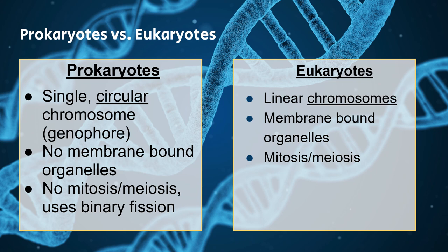Now to compare and contrast prokaryotes and eukaryotes in regards to their DNA and chromosomes. For prokaryotes, or unicellular organisms, they have a genophore, which is a singular circular chromosome. They don't have any membrane-bound organelles, they don't go through mitosis or meiosis — they actually use a form of asexual reproduction through binary fission. Eukaryotes, on the other hand, have linear chromosomes, do have the membrane-bound organelles, and undergo mitosis and meiosis. Both do involve duplication and segregation of DNA, though in prokaryotes that is coupled.